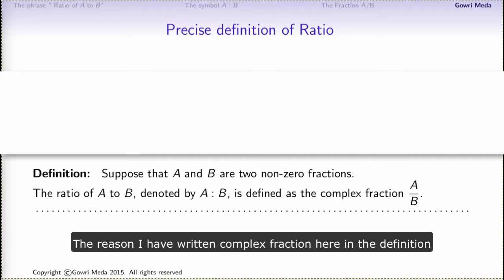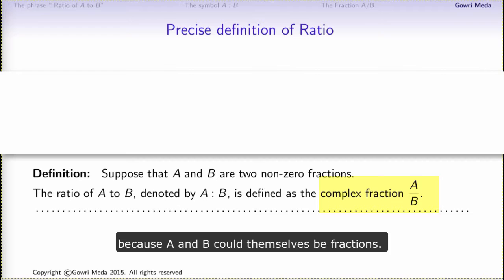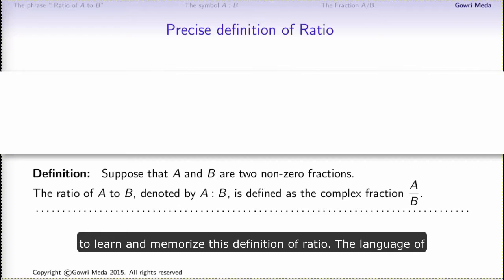The reason I have written complex fraction here in the definition is because A and B could themselves be fractions. Then A over B would be one fraction over another fraction, which you know is called a complex fraction. Before we move on to the next slide, take a minute or two to learn and memorize this definition of ratio.